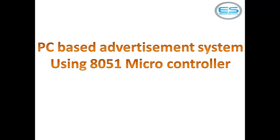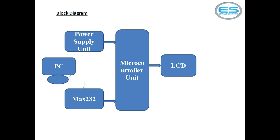This application allows you to print the text whatever you are typing from the keyboard. This is a simple block diagram view of the application. It contains different units: a power supply, a microcontroller unit, and a personal computer which you need to interface with a DB9 connector through MAX232. This is your LCD screen — you can go with different sizes of LCD screens.